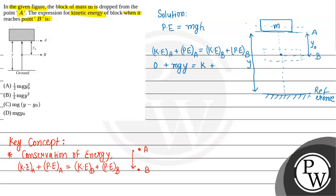The potential energy at point B will be mass M multiplied by acceleration due to gravity and height. This is the reference point ground. The difference between A and B is Y naught, so this distance will be Y minus Y naught.